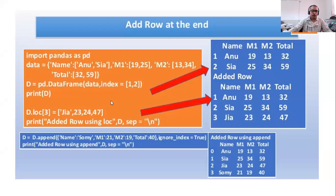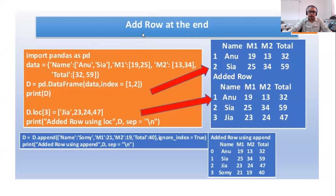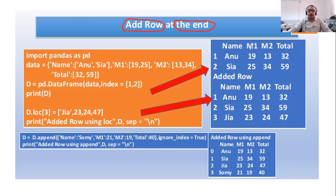Good morning everyone. Today we are going to focus on our topic about data frames. Our sub-topic will be how to add a row at the end of a data frame. You can see the 'student' data frame here — it is a data frame with rows and columns.